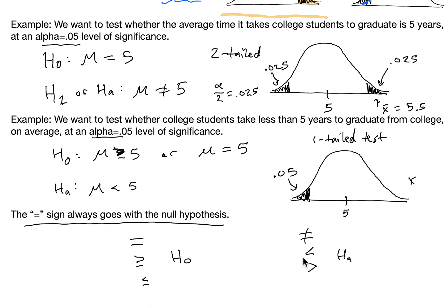One thing to note is that the equal sign will always go with the null hypothesis — whether it's mu equals something, or proportion equals something, or greater than or equal to, or less than or equal to. The alternative hypothesis could be in the form of not equal to, or strictly less than, or strictly greater than.